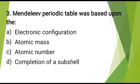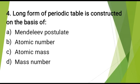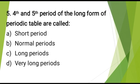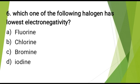Mendeleev's periodic table was based upon the? The correct answer is: atomic mass. The long form of periodic table is constructed on the basis of? The correct answer is: atomic number. The 4th and 5th period of the long form of periodic table are called? The correct answer is: long periods. Which one of the following halogens has the lowest electronegativity? The correct answer is: iodine.